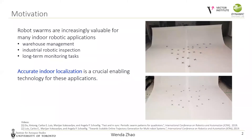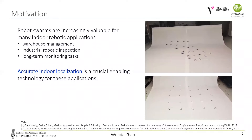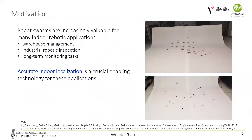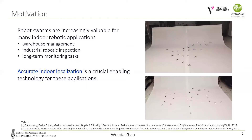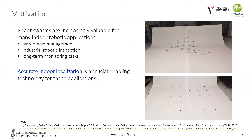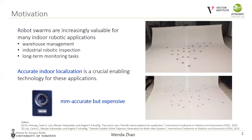Robot swarms have become increasingly valuable for many indoor robotic applications, from warehouse management to inspection and monitoring tasks. Accurate indoor localization is a crucial enabling technology for all these applications. With a millimeter-level accurate motion capture system, we can achieve amazing robot swarm coordination. However, such a highly accurate localization system is often expensive and unaffordable.